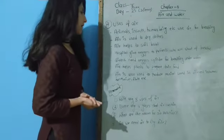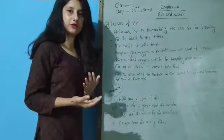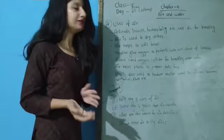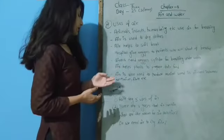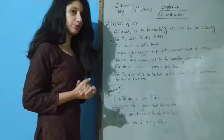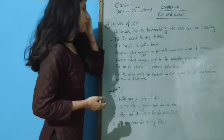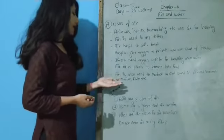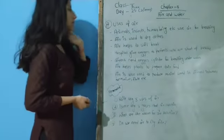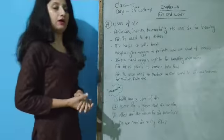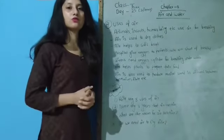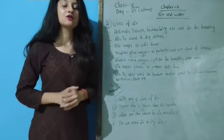Sixth one, air helps plants to prepare their food. As I have said before, in order to make food, plants need air. And the last one here, air is also used to produce musical sound in different instruments like harmonium, flute, etc. So, this is all about the uses of air. And I hope that now you are able to say about some of the uses of air, isn't it?